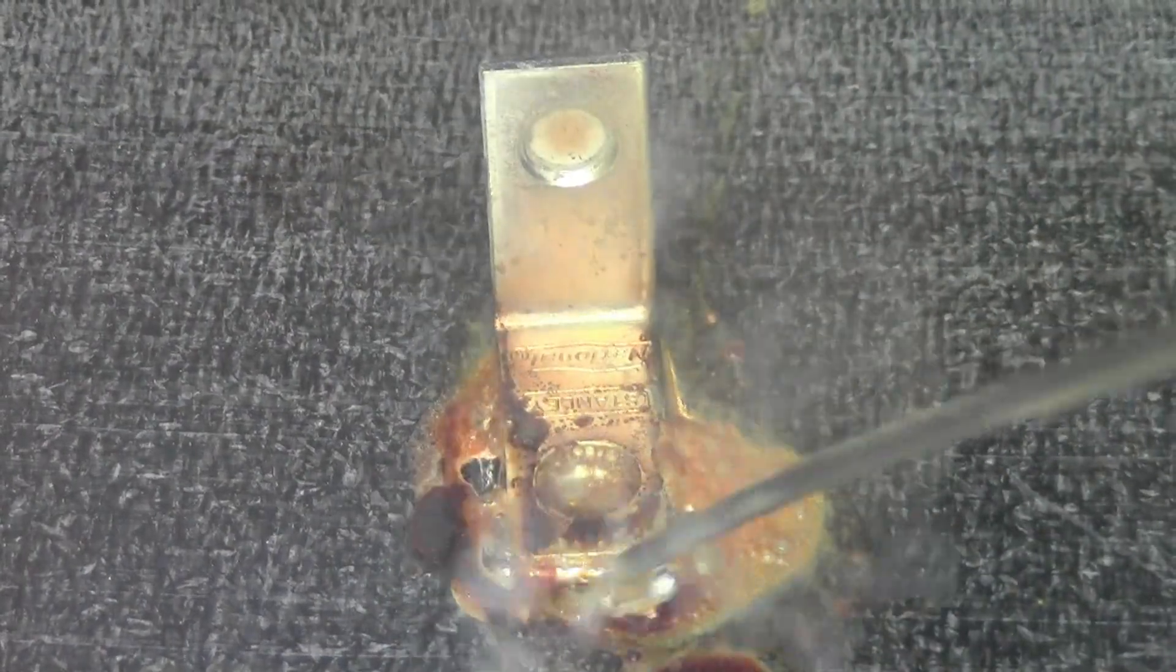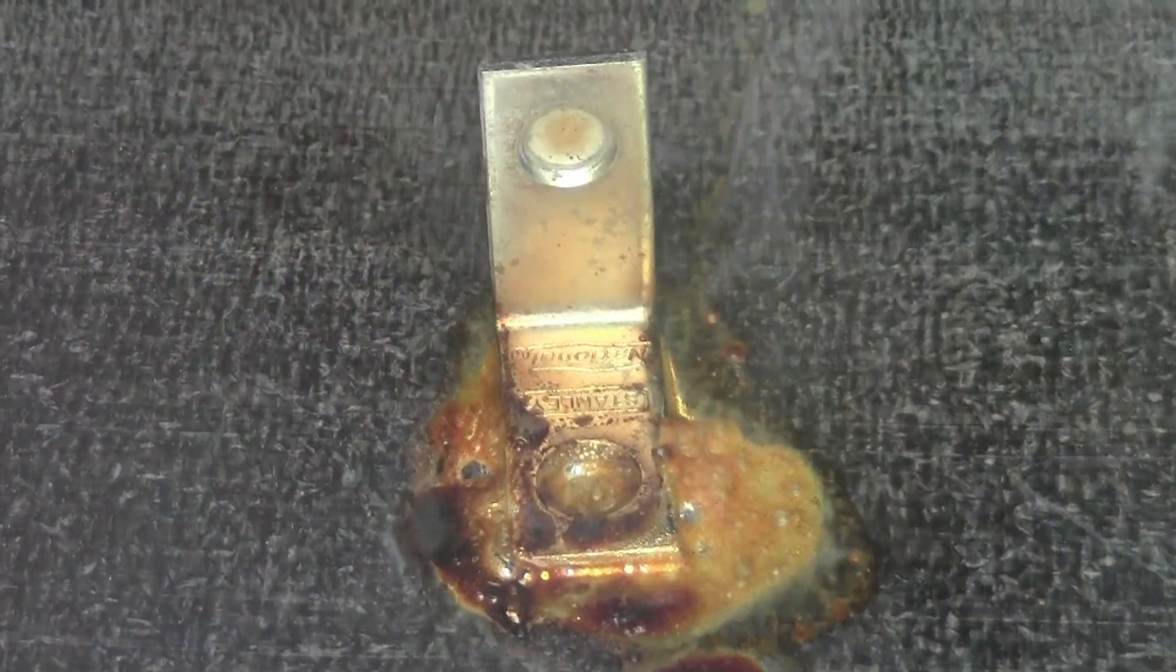The black flux also tells you you have about 200 degrees to go before the zinc coating starts coming off your steel.